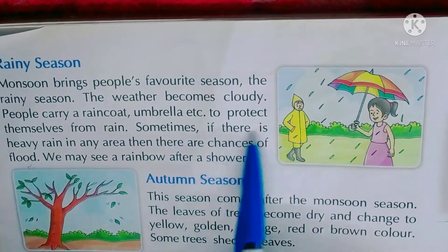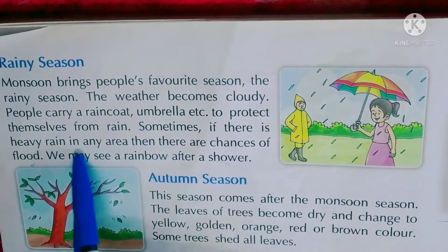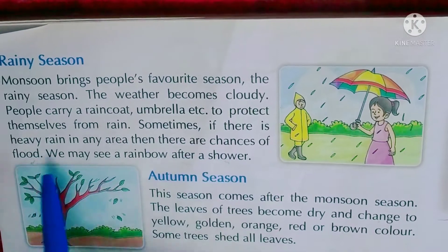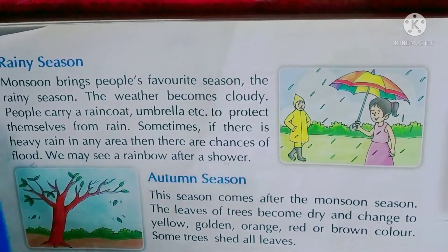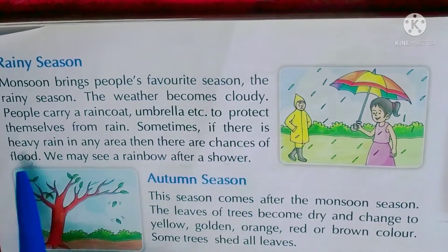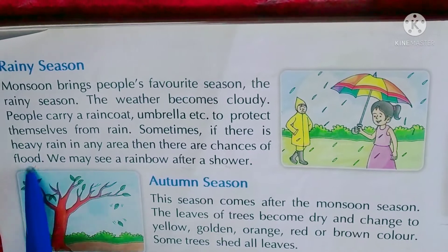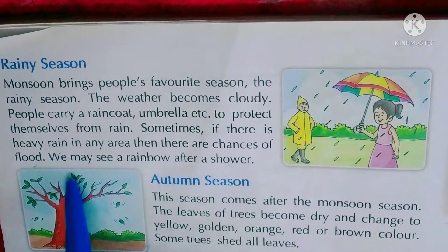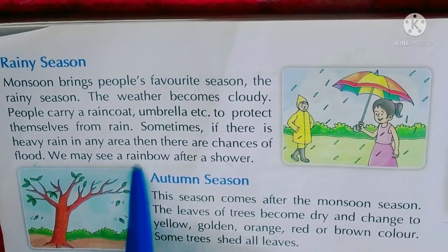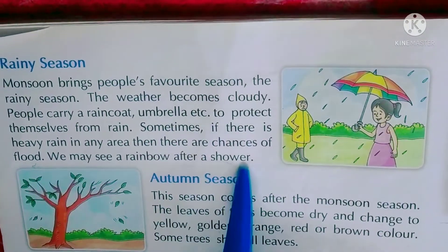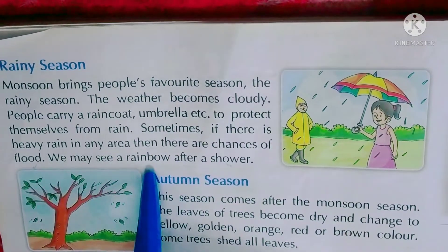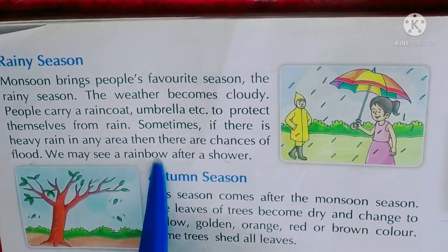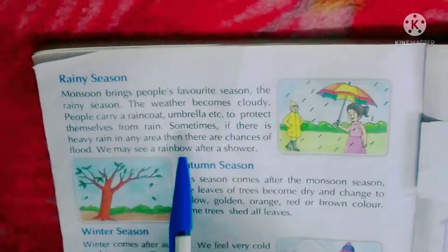Sometimes if there is heavy rain in any area, then there are chances of flood - अगर इस समय कहीं पर बहुत तेज बारिश हो रही हो तो flood का खतरा रहता है। We may see a rainbow after a shower - जब बारिश होती है उसके बाद हमें आकाश में rainbow, मतलब इंद्रधनुष दिखाई देता है, जिसमें सात रंग होते हैं।